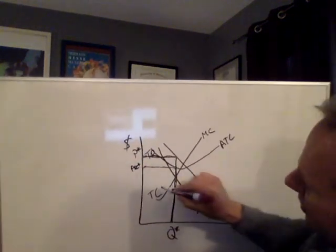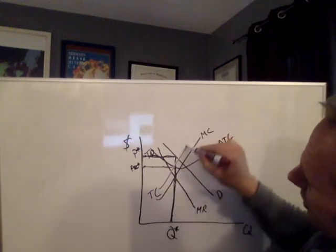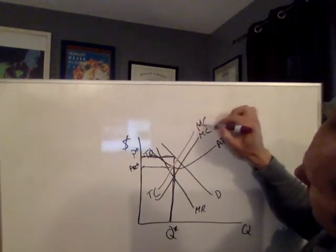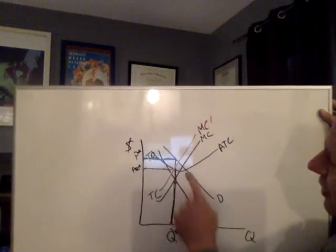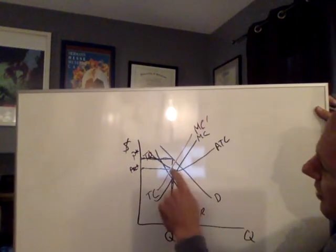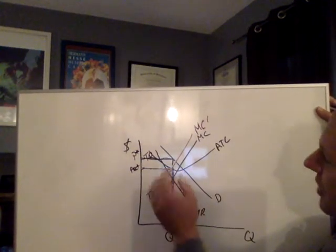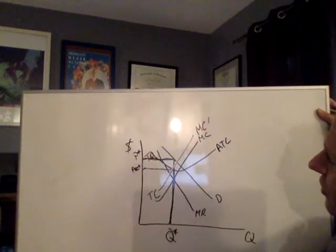Let me set this down so I can switch to a different color marker and we'll draw in that shift. We're given that marginal cost is going to rise, so let's increase marginal cost. I can't leave average total cost where it was because it's no longer being crossed at the minimum.